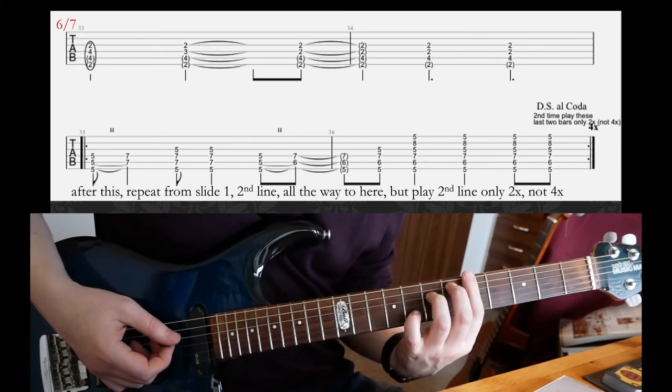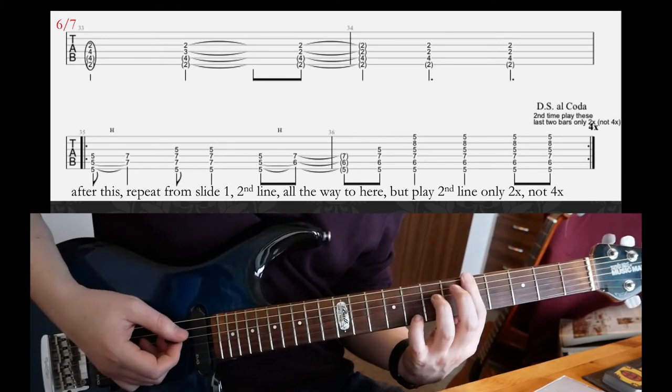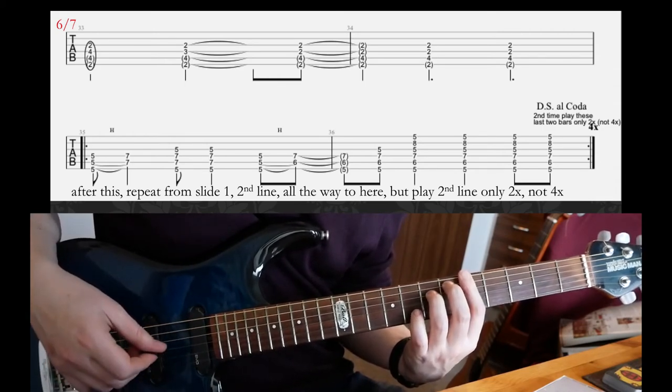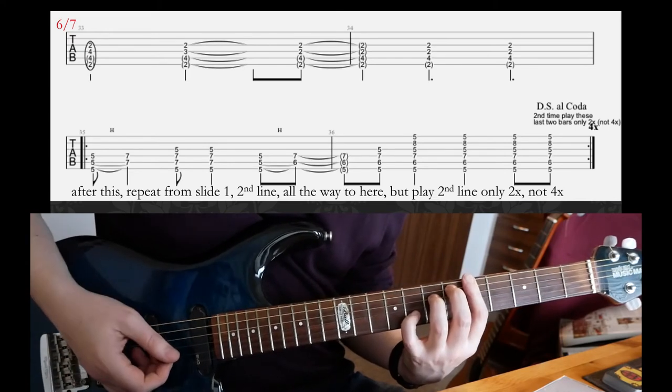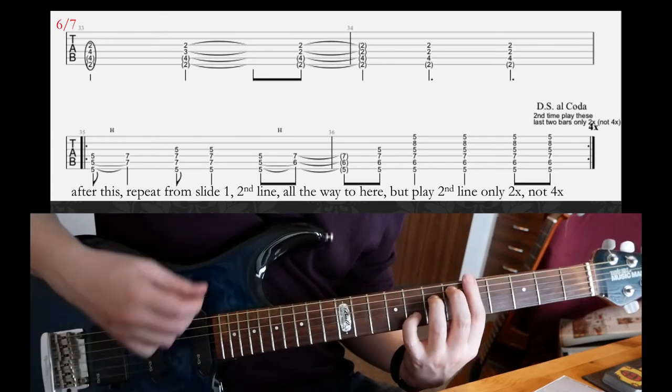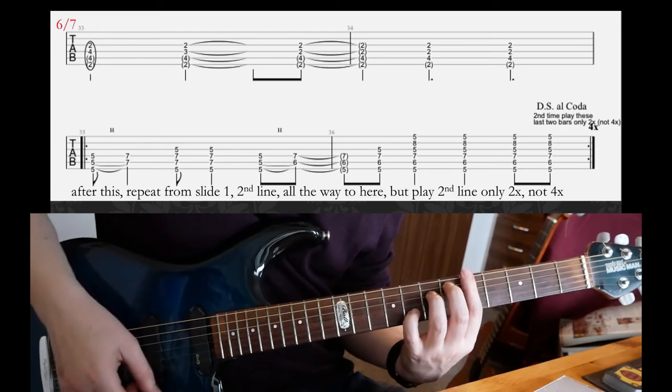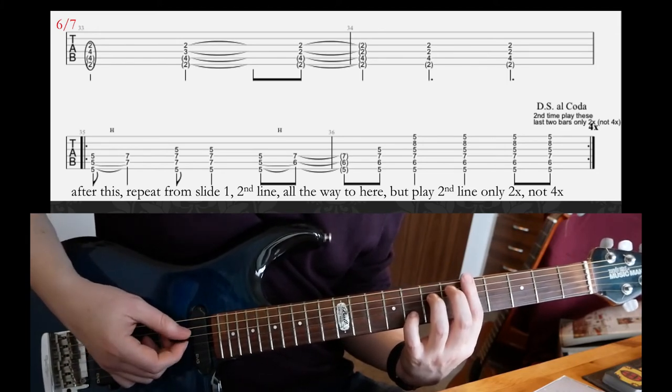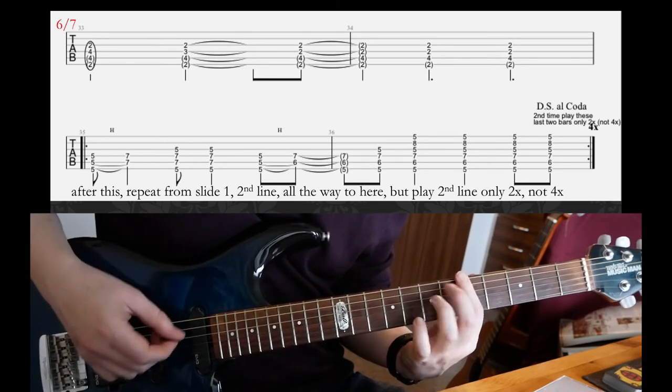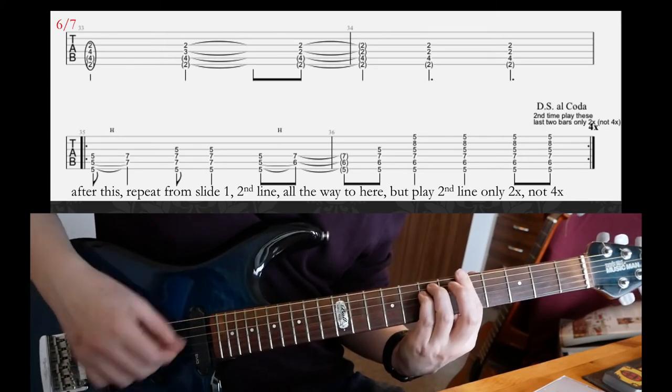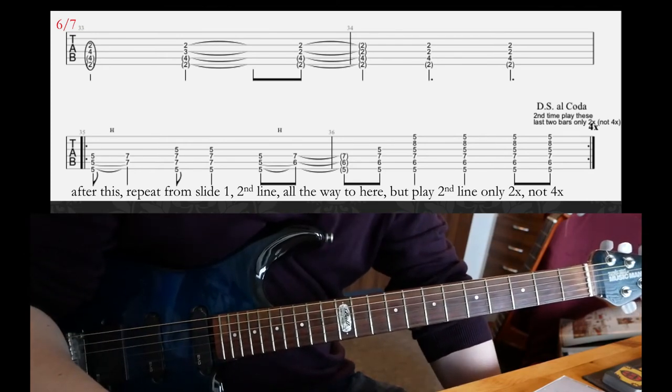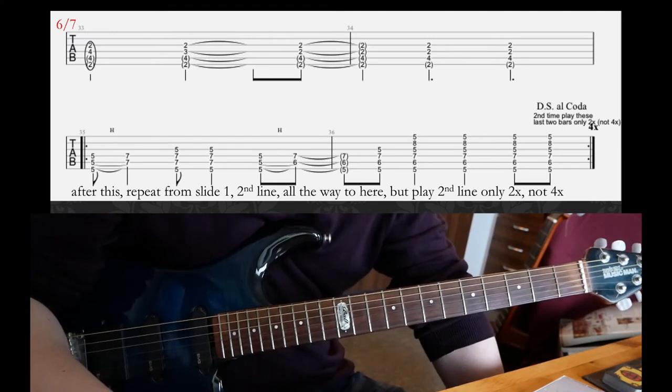And then, kind of similar idea, but you're going to start with 5, 5, 5, but then you're going to hammer on to 6 and 7 on A and D. You're going to have this more darker chord. And then you're also going to play 8th fret on B. And try to hit like the whole chord here after you do the hammer-ons. And then that'll be it for the second line.